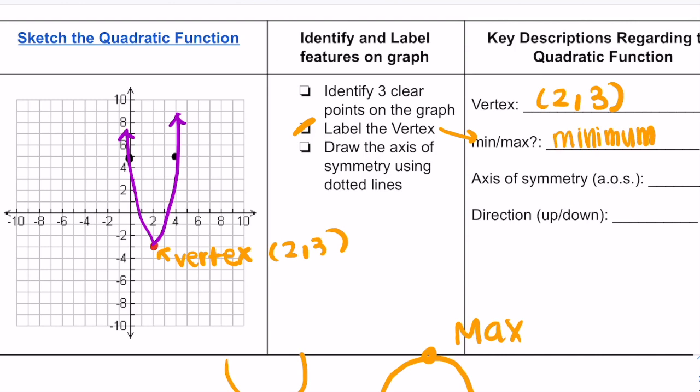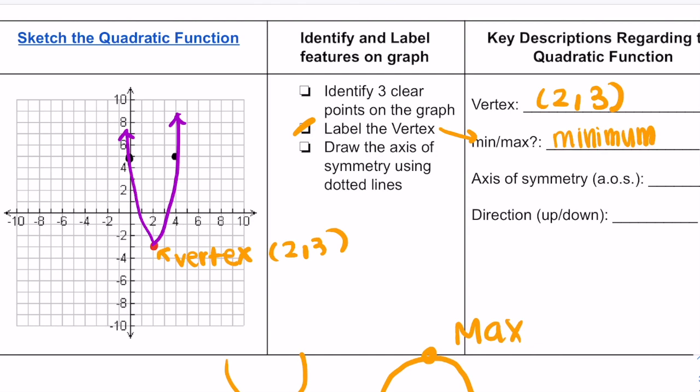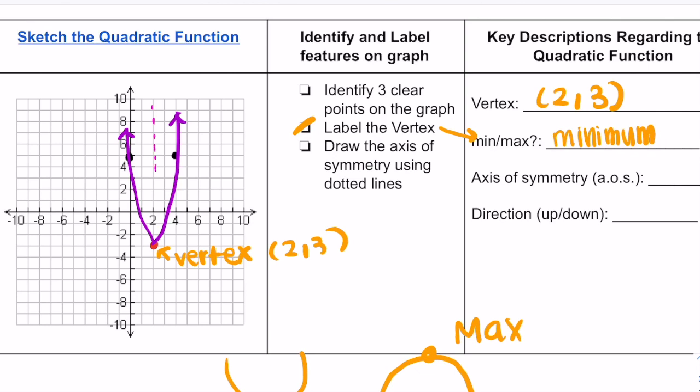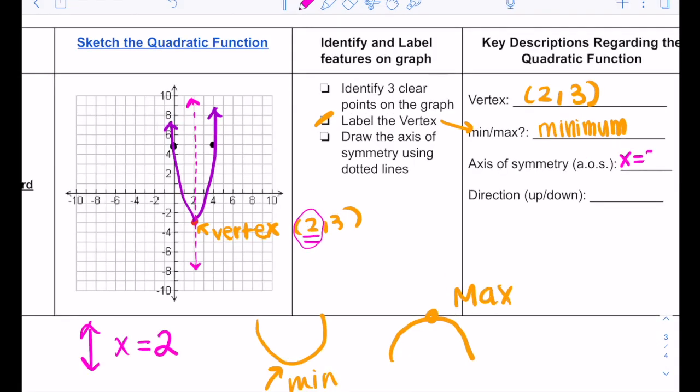Now the next part is the axis of symmetry. Axis of symmetry is where the parabola is reflecting. The vertex will always be on the axis of symmetry. So notice the line of reflection is right here and we're going to create a line. Notice that a vertical line is represented by the equation x equals, and look at the vertex. Our x value is 2, so our axis of symmetry will be x equals 2. I also drew the axis of symmetry right here using dotted lines. So I'm done with this step.